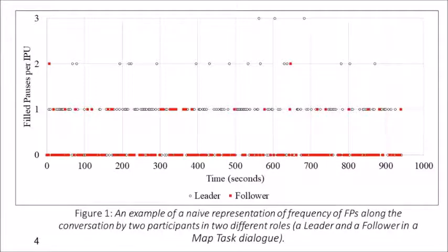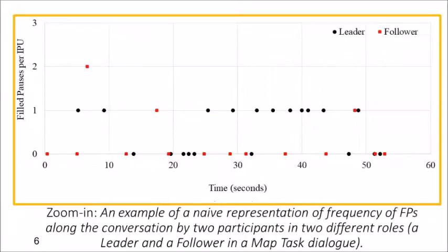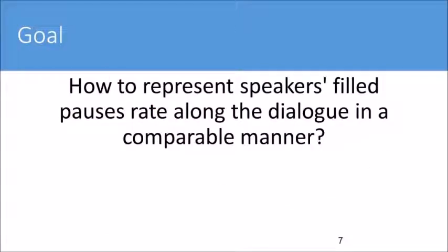Zero is assigned to a speaker turn without a filled pause. Let's zoom in a bit to the beginning of the conversation. Although putting the filled pause annotation in such a way might be good to illustrate a single dialogue, it does not provide measures to analyze interactions between the speakers nor to compare between interactions. Our main goal is to answer the following question: how to represent speakers' filled pauses rate along the dialogue in a comparable manner?